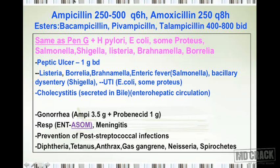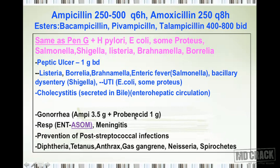Ampicillin and amoxicillin are secreted in bile and have enterohepatic circulation. Because of their concentration in bile, they can be used for cholecystitis and hepatobiliary tract infections. For gonorrhea, ampicillin 3.5 grams plus probenecid 1 gram can be used as a combination. Probenecid competes for renal excretion with penicillins, decreasing renal clearance and achieving better plasma levels — which is why this combination is used.